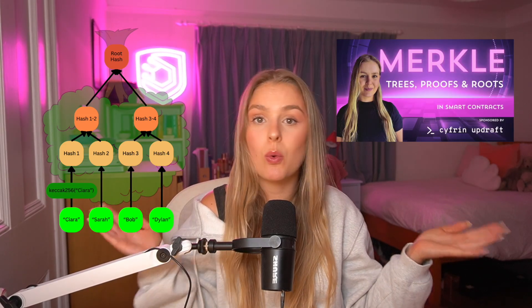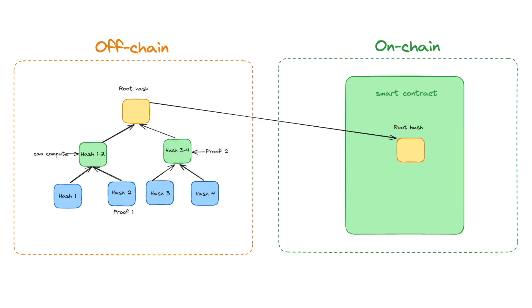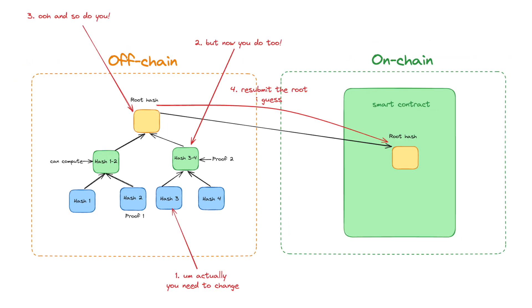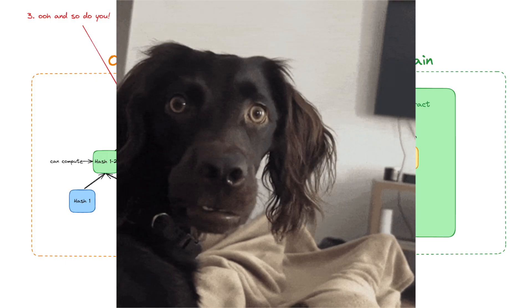Merkle trees are everywhere in blockchain and in the previous video we covered what these Merkle trees actually are and how they work. Now you might have noticed a sneaky little problem with these Merkle trees: we calculate them and store them off-chain. The only part of the Merkle tree that we're actually storing on-chain is the Merkle root. Now what happens if we need to update these trees? What happens if we need someone to add an address to our allow list? We'd have to have some centralized person come in, add the value to the Merkle tree and then recalculate the root hash, which would be incredibly centralized and require trust for all of the users.